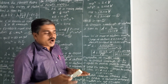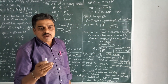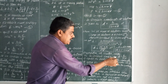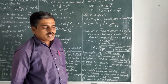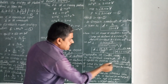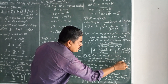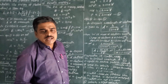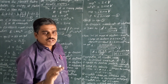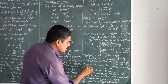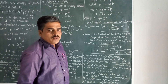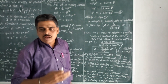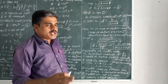Next are the properties of matter waves. We know that the De Broglie wavelength lambda is equal to h by mv. Lighter the particle, greater the wavelength associated with it. Lesser the velocity, longer the wavelength associated with it.